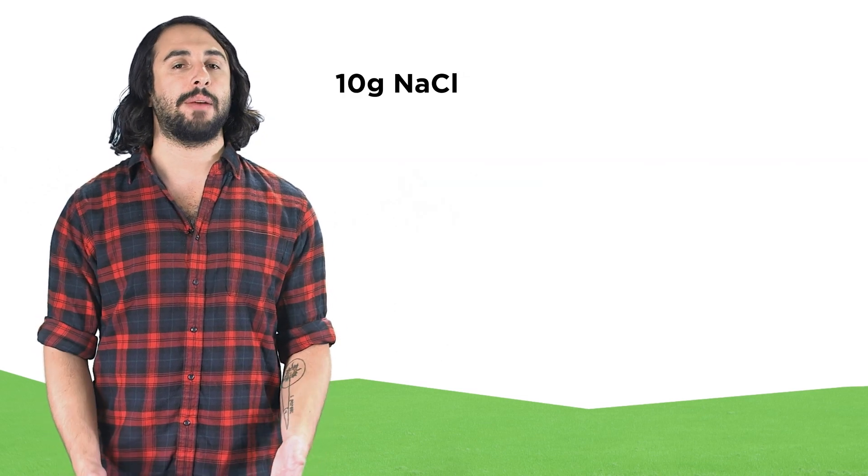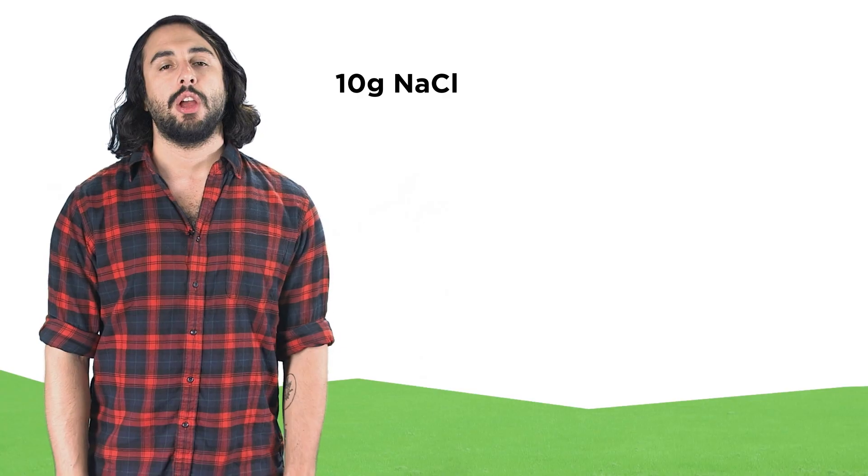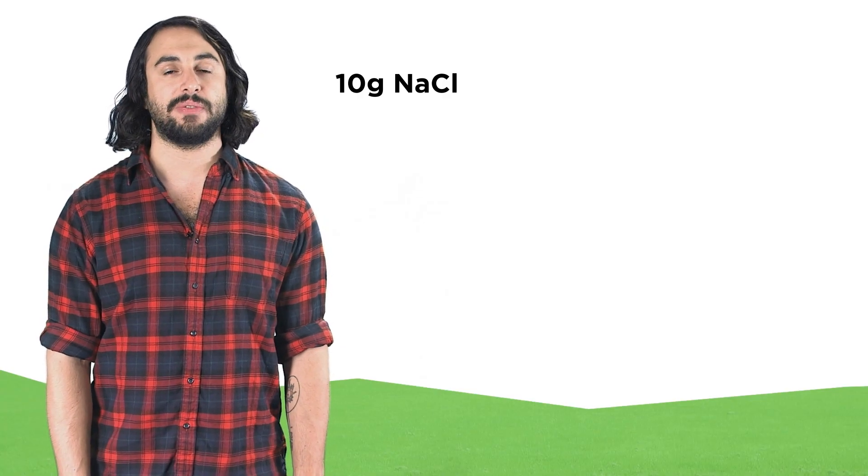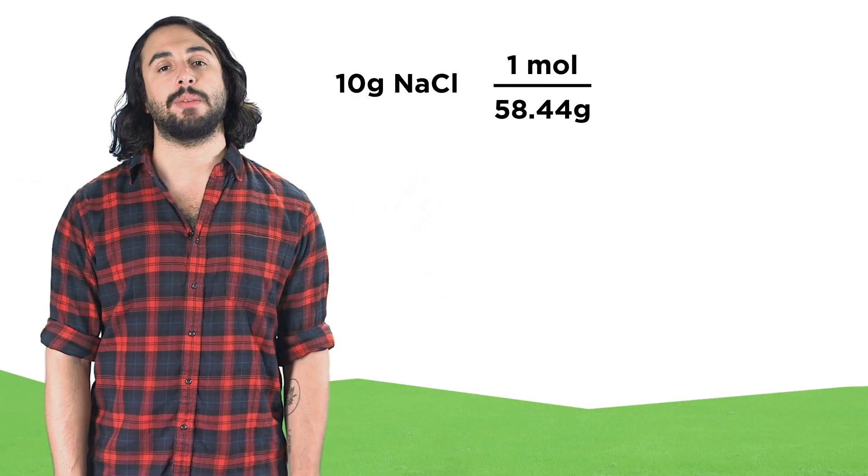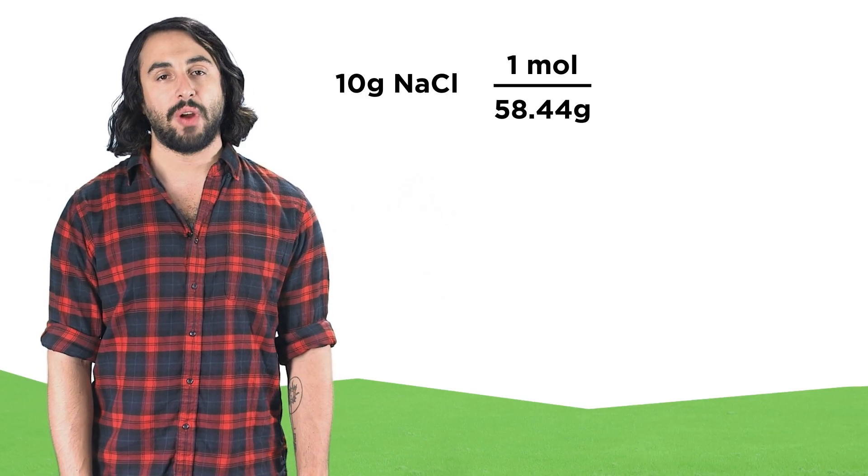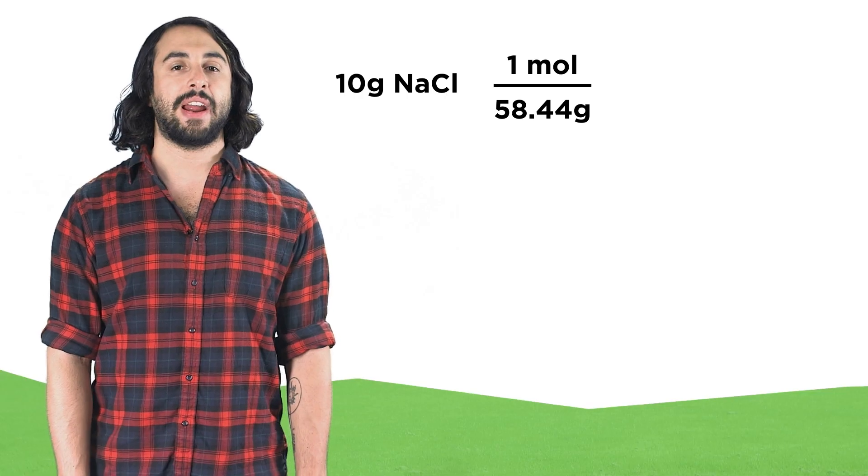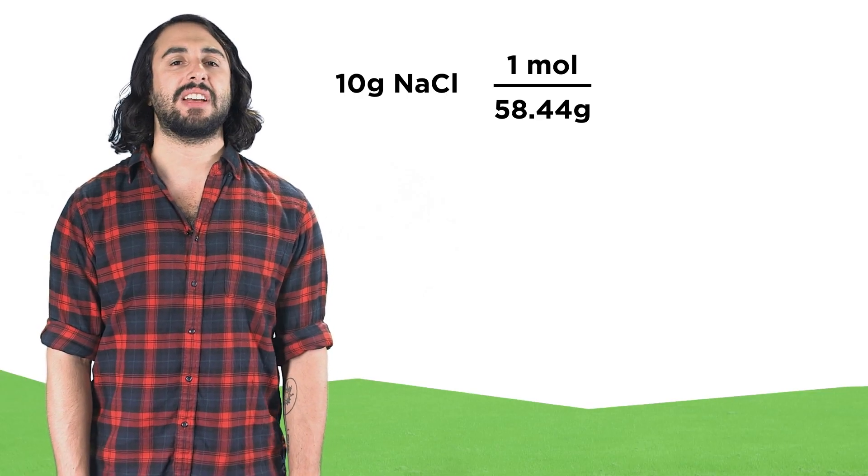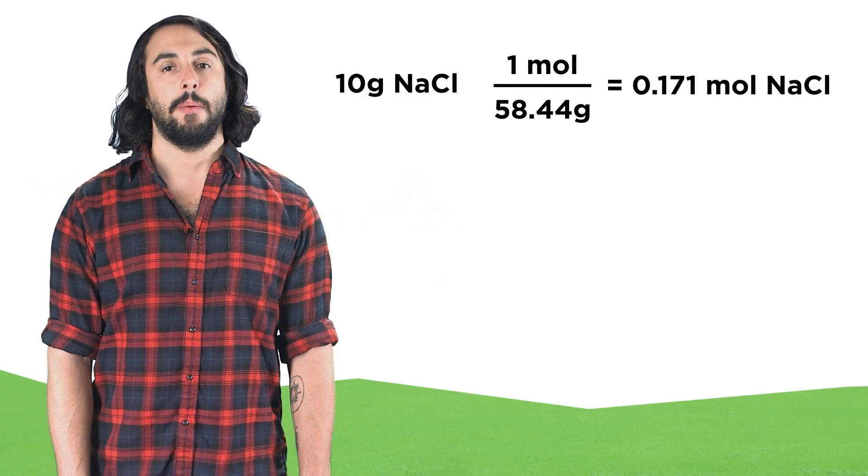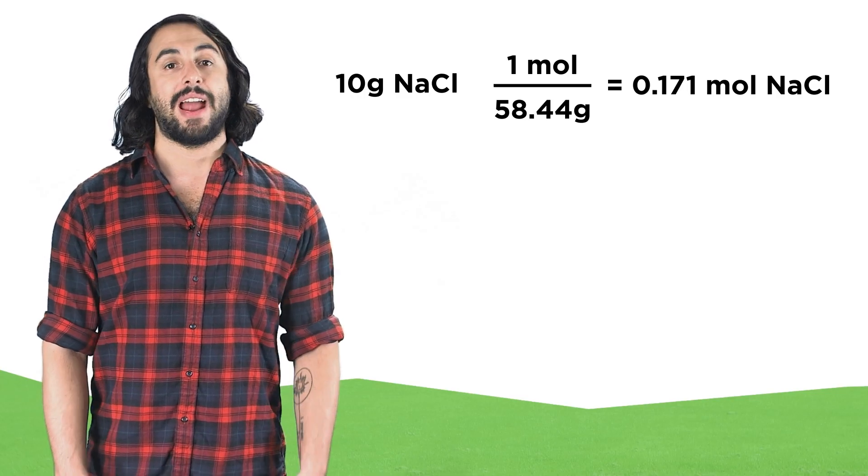Say we have ten grams of sodium chloride. We will first need to convert this value into moles. Sodium chloride has a molar mass of 58.44 grams per mole, so ten grams times one mole over 58.44 grams gives us 0.171 moles of the salt.